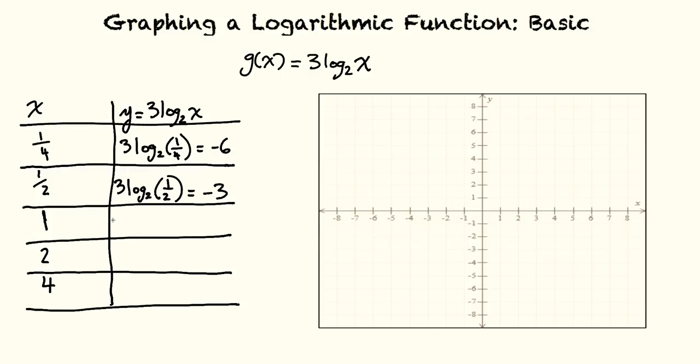When we plug in 1, 3 log base 2 of 1. What does this equal? Well, 2 to the what power equals 1. Anything to the 0 power equals 1. So this means that log base 2 of 1 equals 0. Multiply by 3 equals 0.